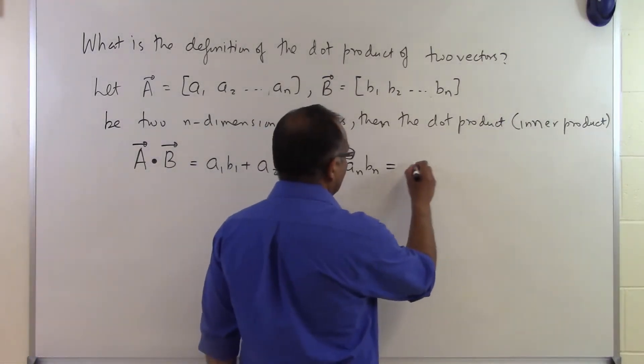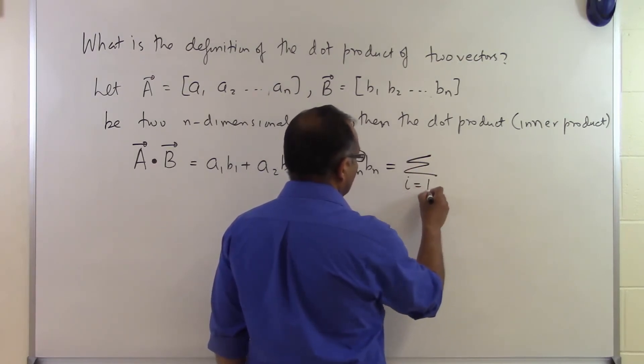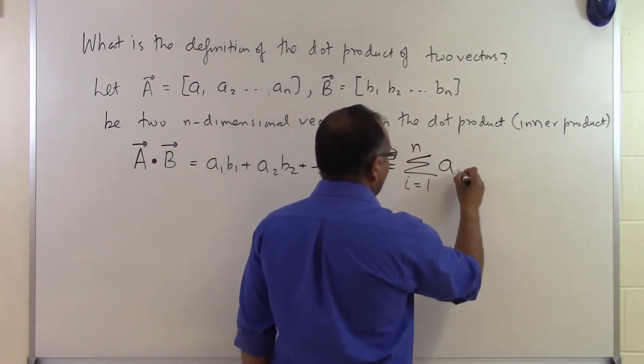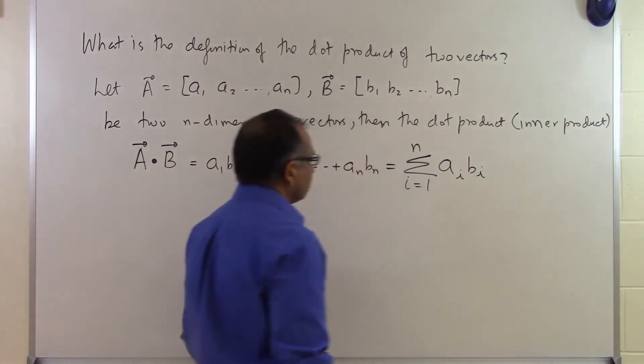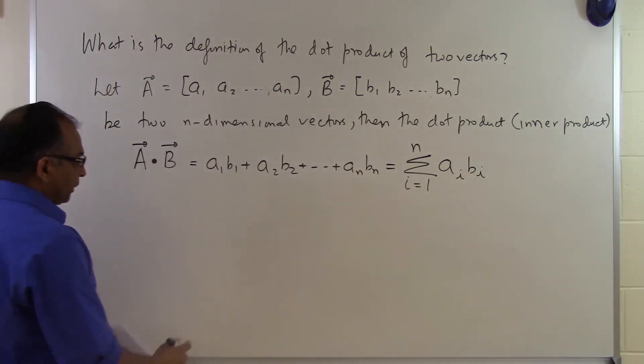I can write this as a summation: sum from i equals 1 to n of a_i times b_i. So that's how you find the dot product of two vectors.